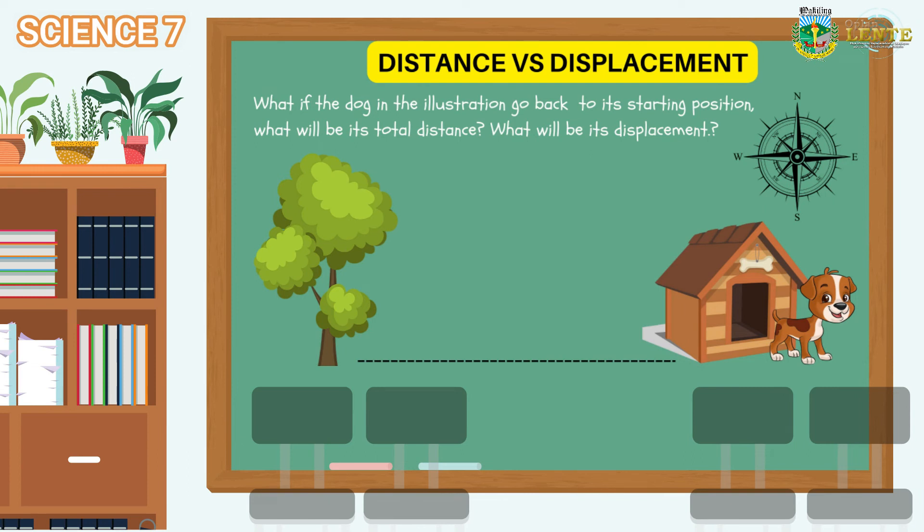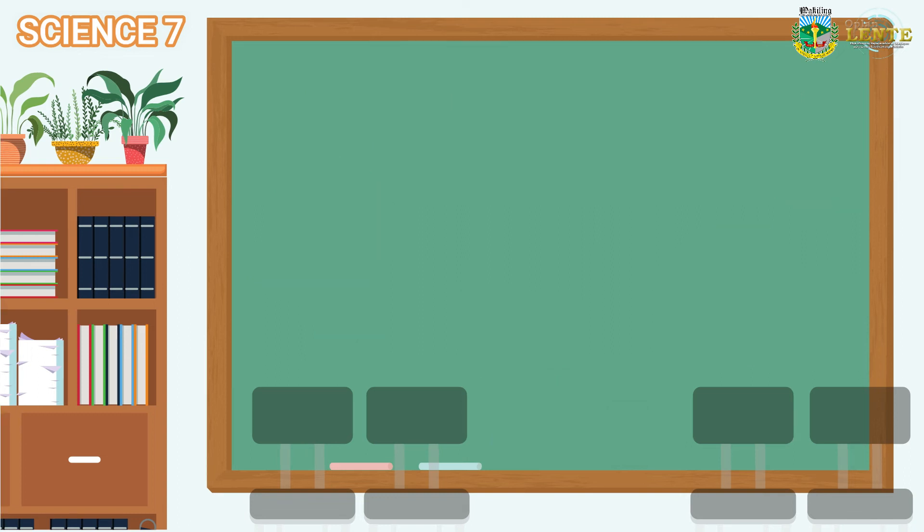What if the dog travels from its starting position to its final position and moves back from the start? What will be its total distance and displacement? Correct! The total distance is 20 meters. Displacement is zero. Why do you think displacement becomes zero? Right! There is no change in the initial and final position of the dog.